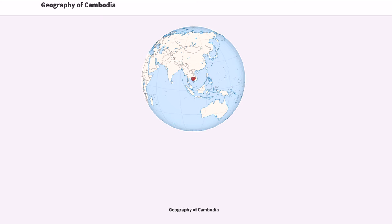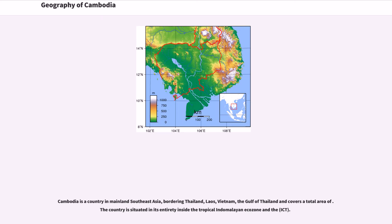Cambodia is a country in mainland Southeast Asia, bordering Thailand, Laos, Vietnam, and the Gulf of Thailand, covering a total area of the country.